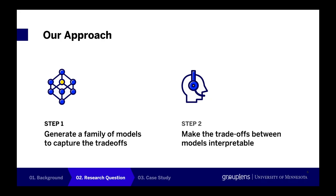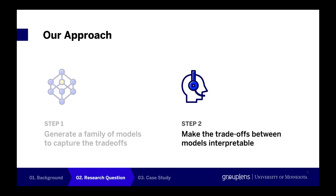To address this challenge, we proposed an approach for communicating inherent algorithmic trade-offs with two steps. First, for the specific algorithm, identify a set of design objectives and the corresponding system criteria in the algorithm, then generate a family of models that can capture these trade-offs. Next, develop methods to communicate these trade-offs between models. The communication methods should allow designers and users to explore the trade-offs and hence help them select specific models that will align with their needs and goals.